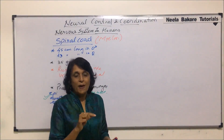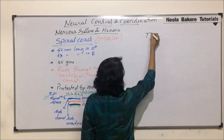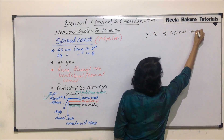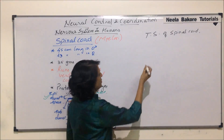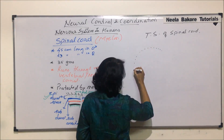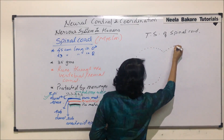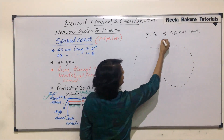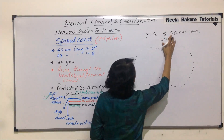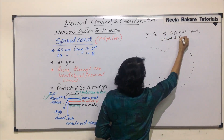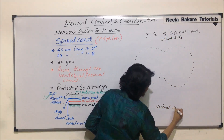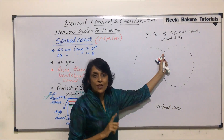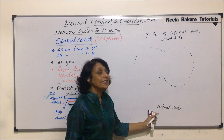If we cut the spinal cord transversely, we would see the structure known as the transverse section of the spinal cord. It has two fissures or depressions, so let us draw this section. This side is the dorsal side and this is the ventral side. The depression on the dorsal side is not that deep, whereas the one on the ventral side is deeper.